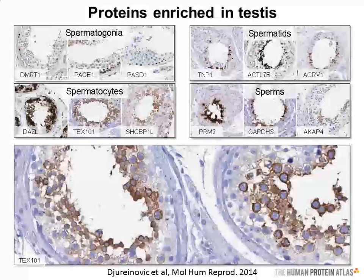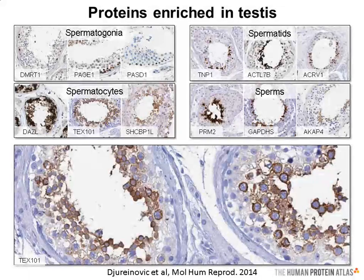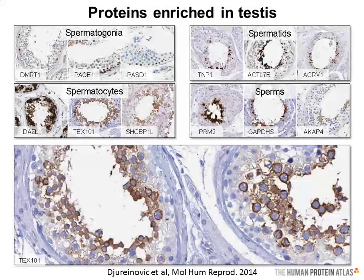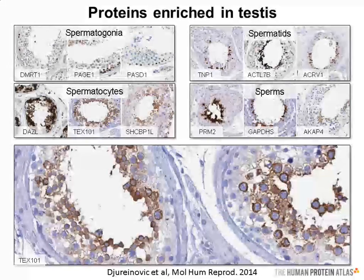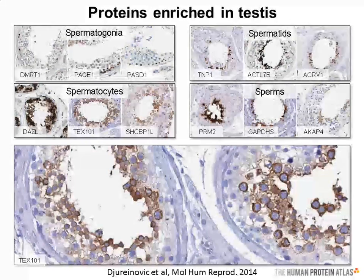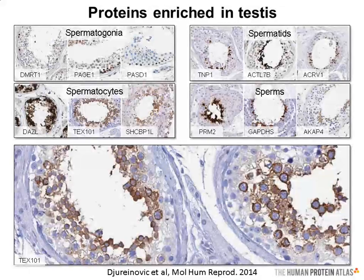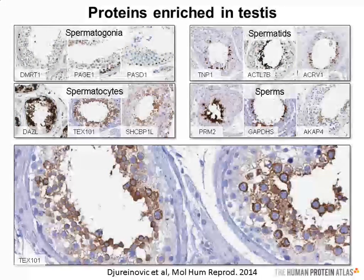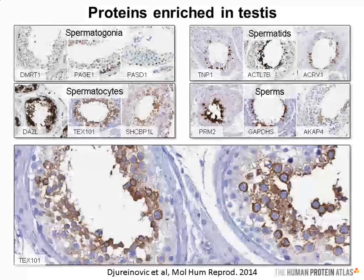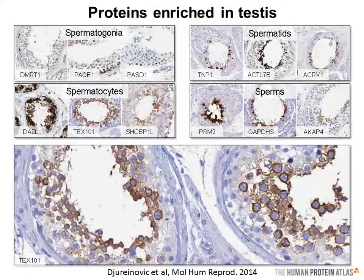By combining transcriptomics data with immunohistochemistry, we were able to identify proteins selectively expressed in various stages of spermatogenesis, such as proteins expressed in spermatogonia, spermatocytes, spermatids, and sperm. We not only see the cell types where the protein is expressed but also the subcellular localization of the staining pattern. For example, in the bottom image of TEX101, we see clear cytoplasmic expression in spermatocytes. A majority of group-enriched genes shared expression with fallopian tube, which is expected since ciliated cells in the fallopian tube and sperm share functions related to cell motility.